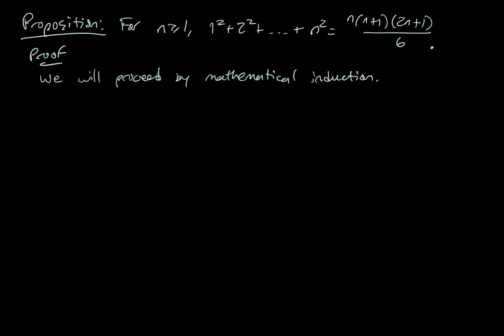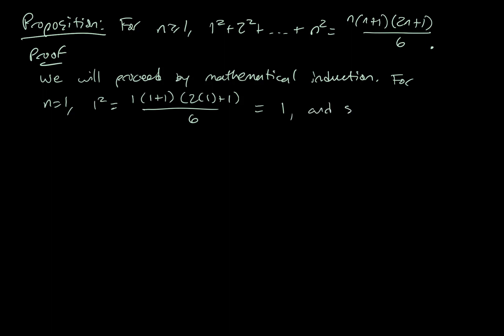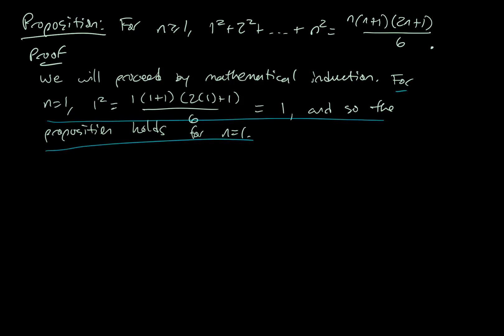First we need to show the first domino fell over. For n equals 1, we have 1 squared equals 1 times 1 plus 1 times 2 times 1 plus 1 over 6. That gives us 1 times 2 times 3 over 6, which equals 1. So 1 equals 1, and the proposition holds for n equals 1. This part is called the base case — showing the first domino fell down.